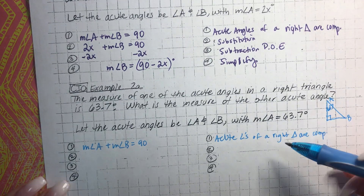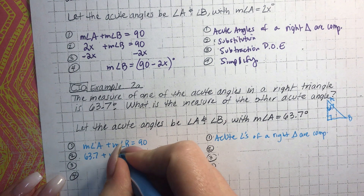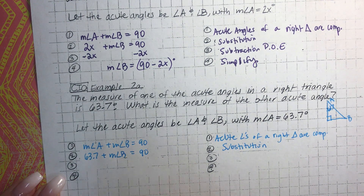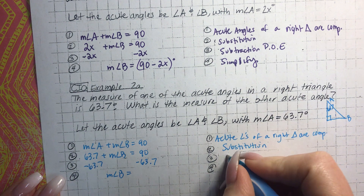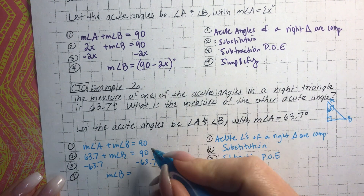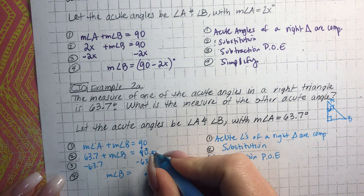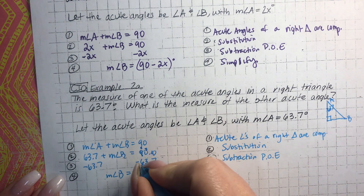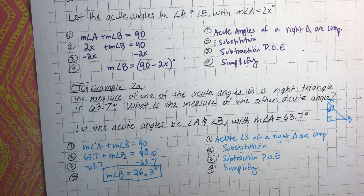We substitute 63.7 in for angle A: 63.7 plus measure of angle B equals 90. Then, using the subtraction property of equality, we subtract 63.7 from both sides. Borrowing as needed — making adjustments so we get 0.3, then 10 minus 7 is 3, 9 minus 3 is 6, 8 minus 6 is 2 — the measure of angle B equals 26.3 degrees. Simplify. Perfect.